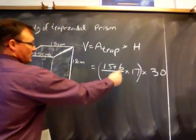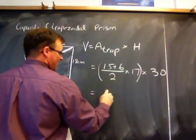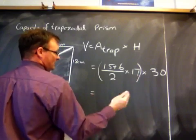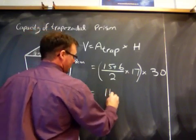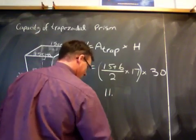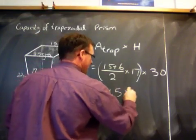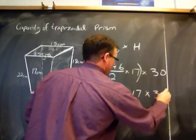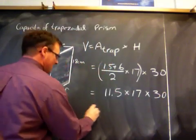We basically worked this through. 21 divided by 2 is 11.5 times 17. I'll have to look that one up. 11.5 times 17 times 30. And that's going to give us the volume.